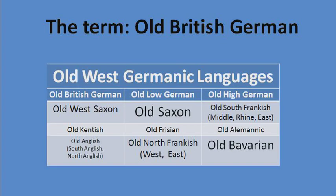This brings us to the Old West Germanic languages in general. We have our varieties: Old British German with Old West Saxon, Old Kentish, Old Anglish — North and South. Then we have Old Low German with Old Saxon and Old Frisian. Then Old North Frankish, with West and East varieties — also called Old Dutch — which are the origins of Dutch and West Flemish. And we have Old High German, which includes Old South Frankish — with Middle, Rhine, and East Frankish — as well as Old Alemannic and Old Bavarian.